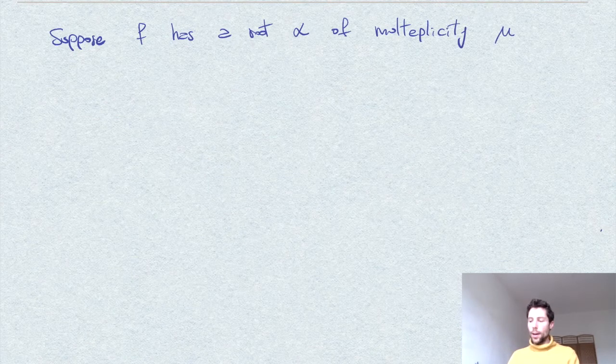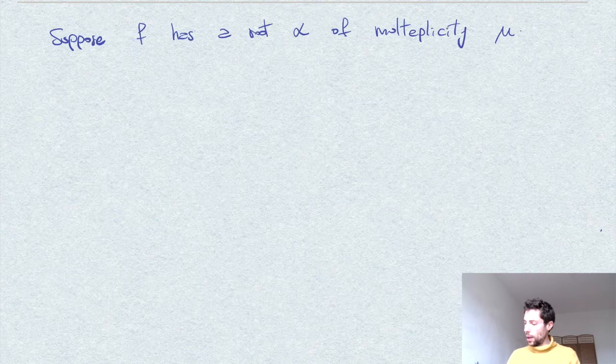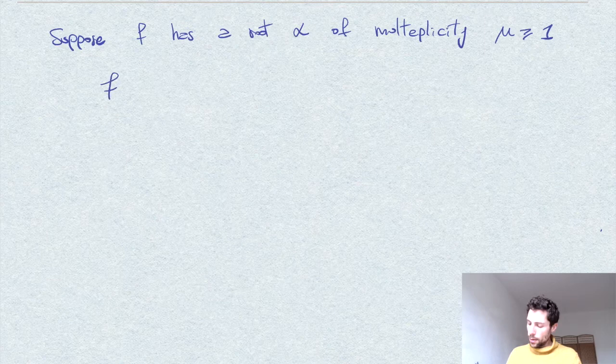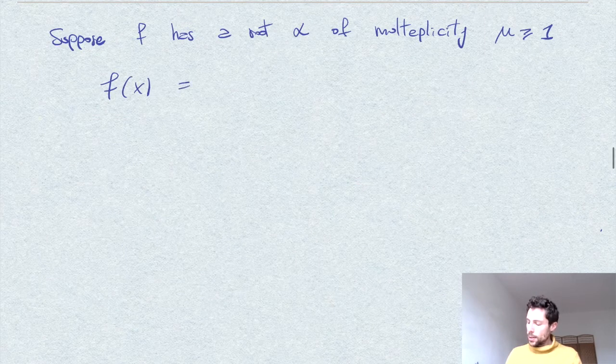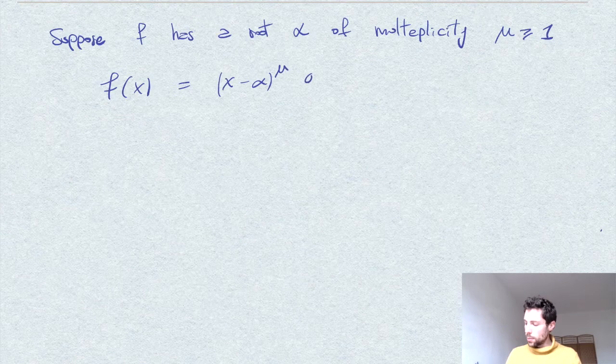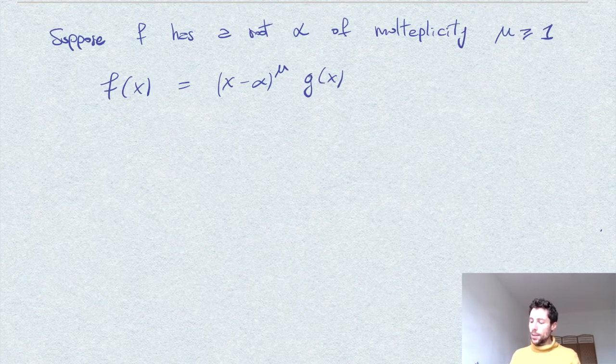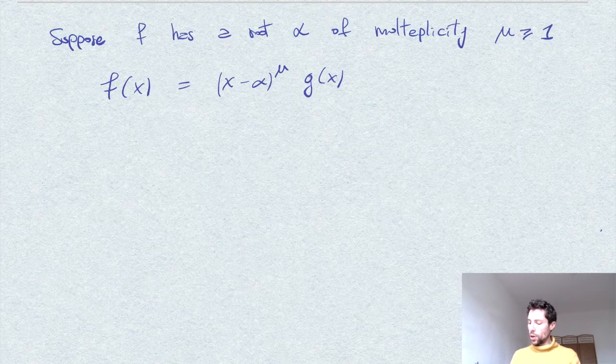So it has any root. So even we allow multiplicity one. Well then, as we said, we can write f of x as x minus alpha power mu times g, just as above. And by taking the derivative of this polynomial expression,